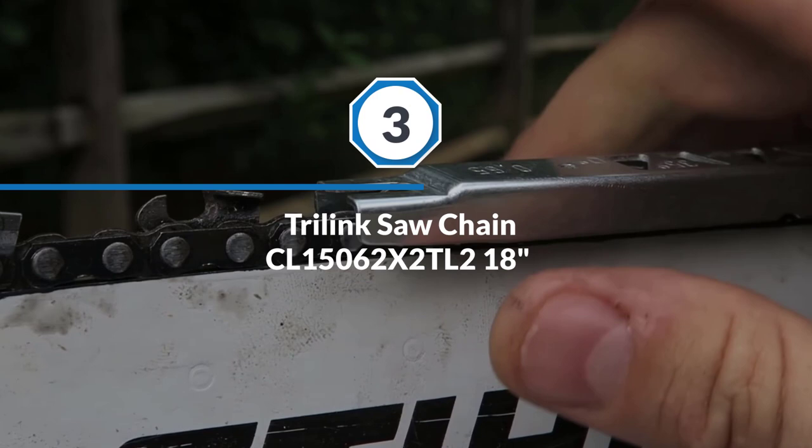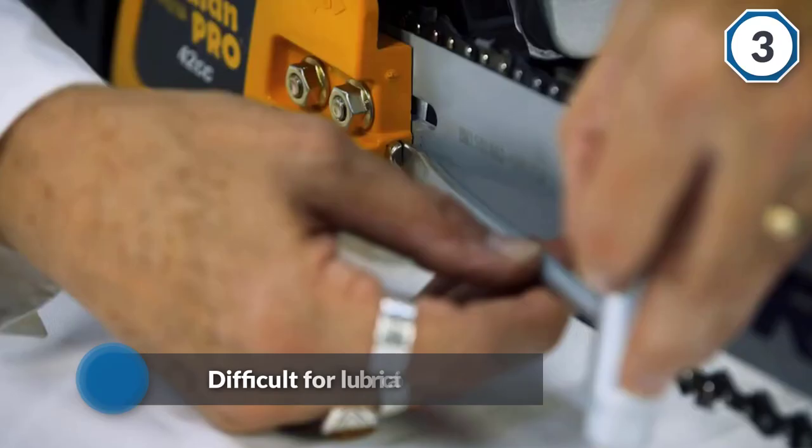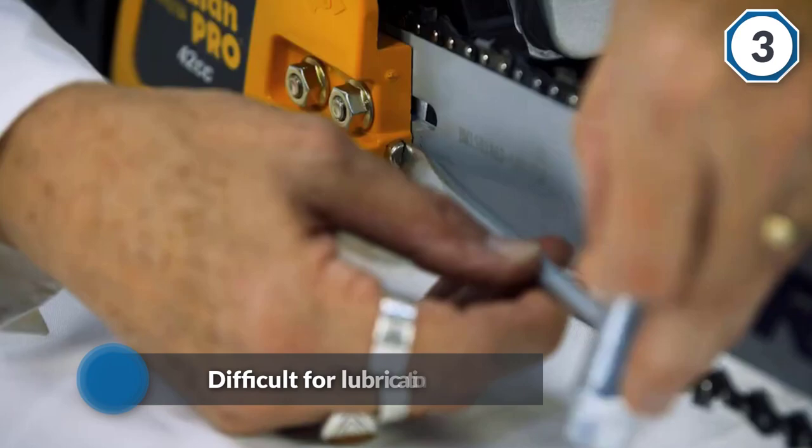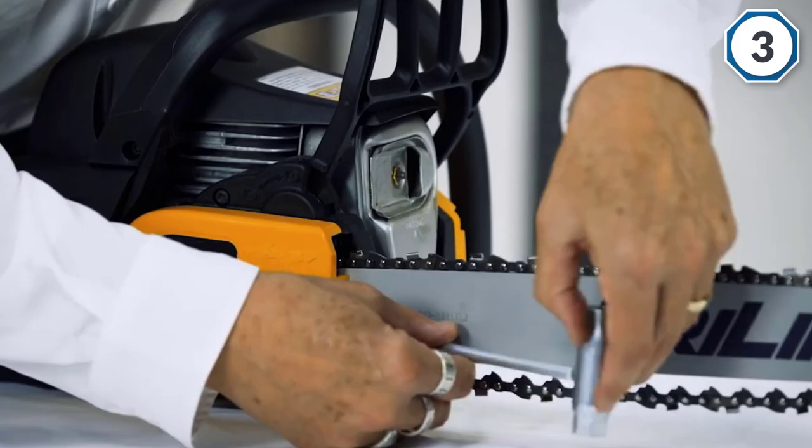Tri Link saw chain CL15062X, 62TL, 18 inch. If you're a chainsaw veteran, you know it's difficult for lubrication to reach into tough spots such as rivets, drive links, etc. However, the Tri Link signature oilway mechanism ensures maximum oil flow.